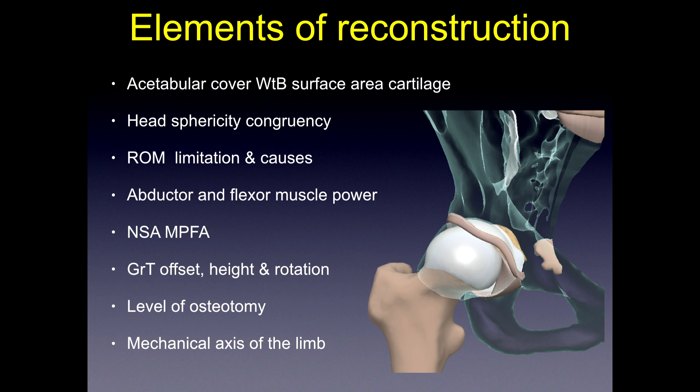In doing proximal femoral osteotomies, you need to think about all these different aspects: the weight-bearing surface area congruency and quality of cartilage, head sphericity and congruency, limitations to range of movement and their causes — intra-articular or extra-articular. Consider the effect of your osteotomy on abductors and flexor muscle powers. We've talked about measuring the neck-shaft angle and medial proximal femoral angles. Think about how the greater trochanter and lesser trochanter will change, the osteotomy level, and the mechanical axis overall.